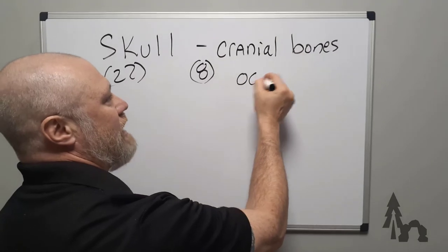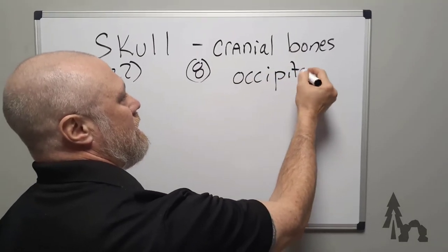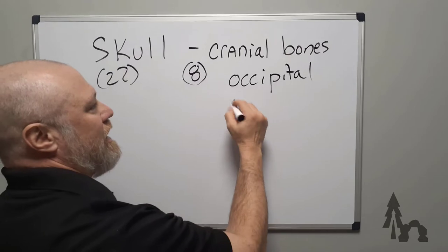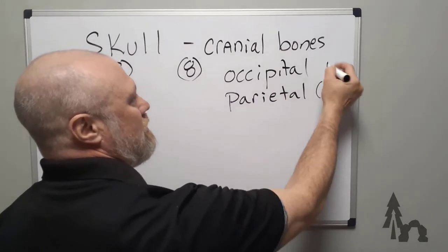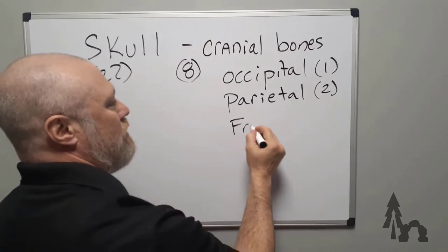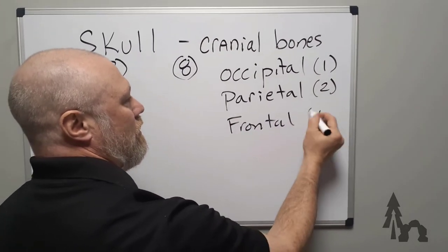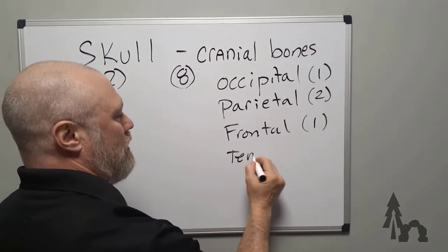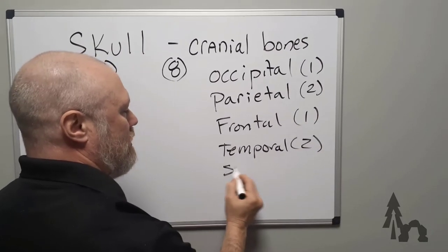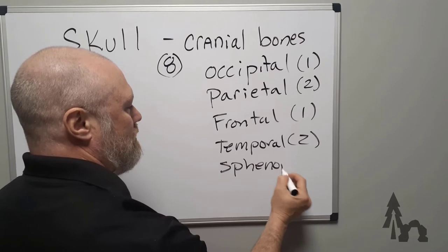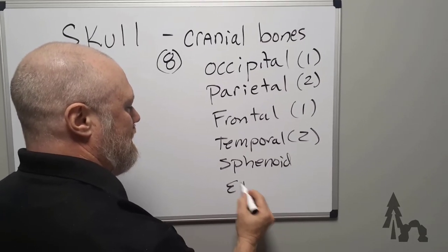You're going to have your occipital bone. There's one of those. Then you'll have your parietal bones. There are two of those. Then you'll have a frontal bone. One frontal bone. Temporal bone. There are two of those. And then you're going to have one called the sphenoid, which is tough to see, and an ethmoid.